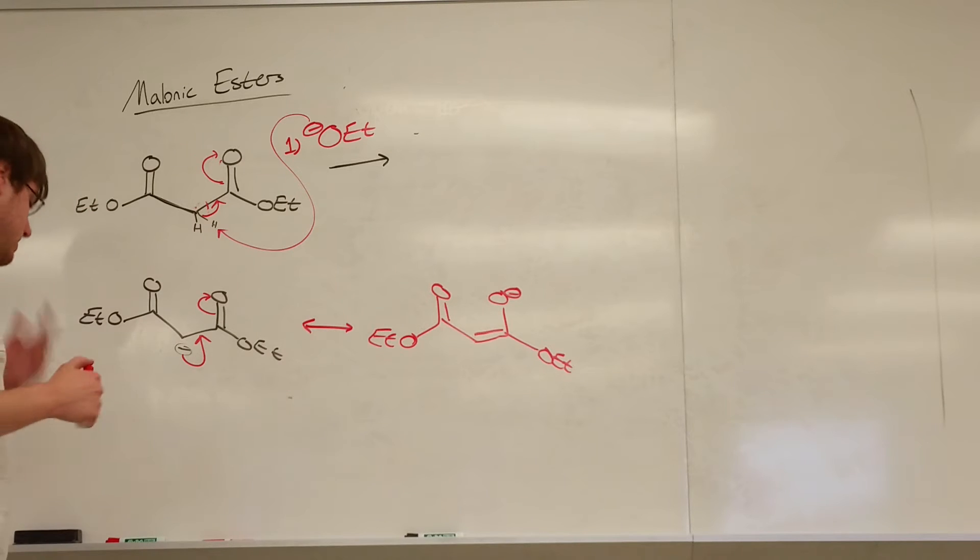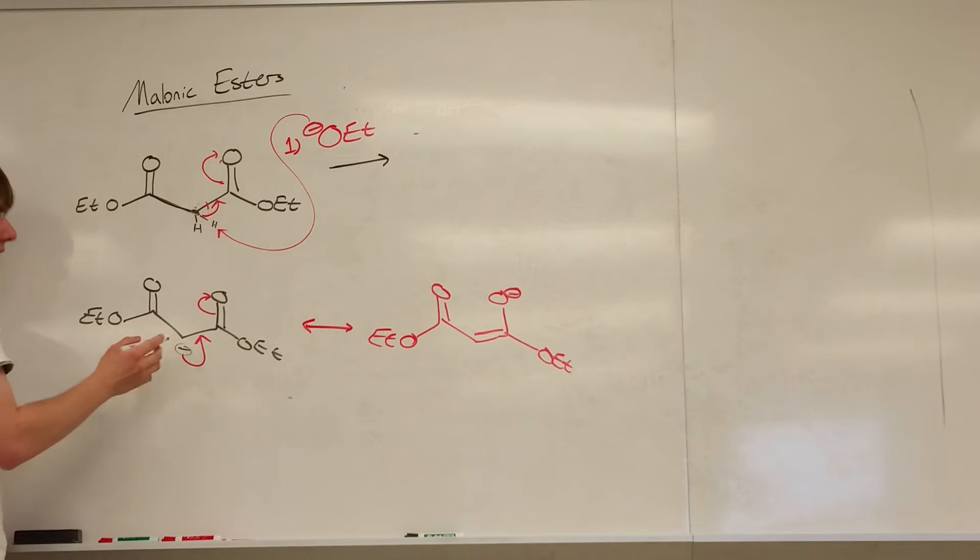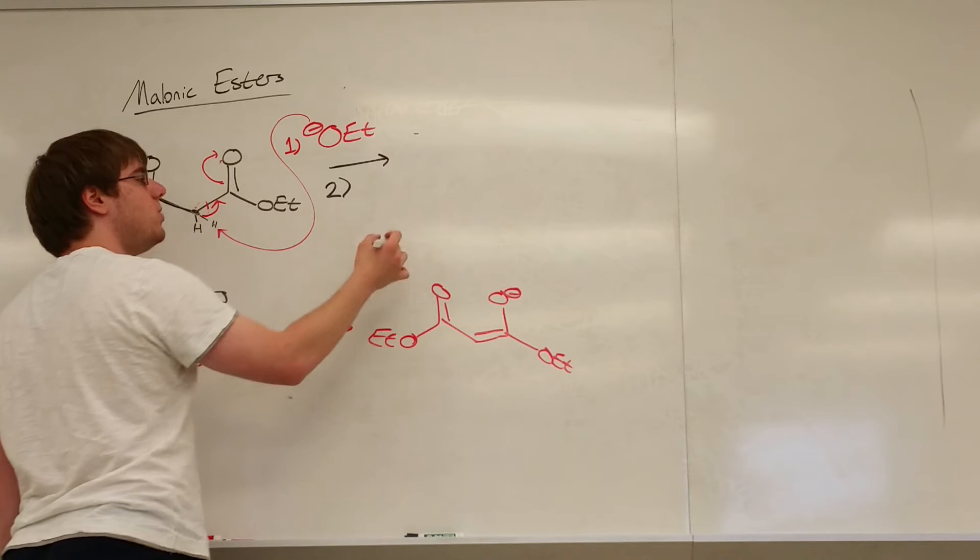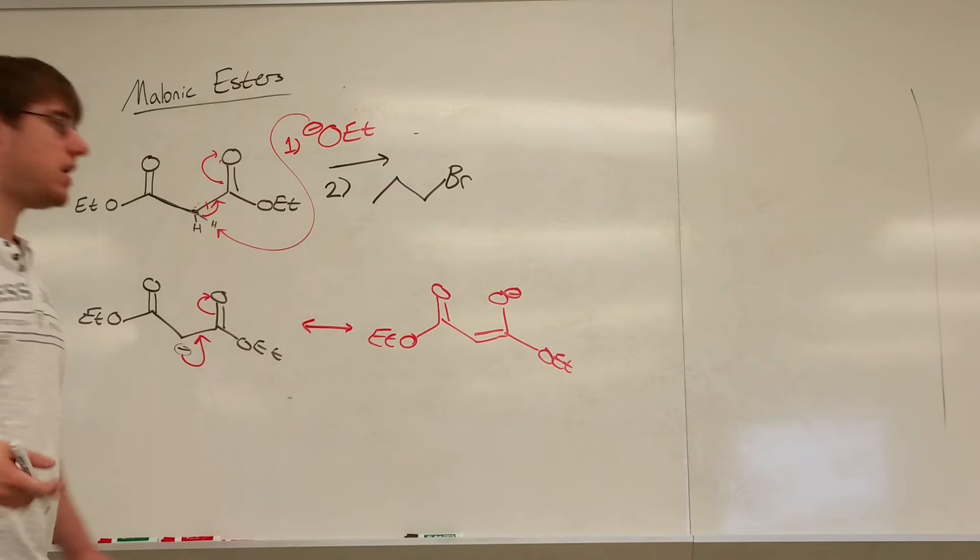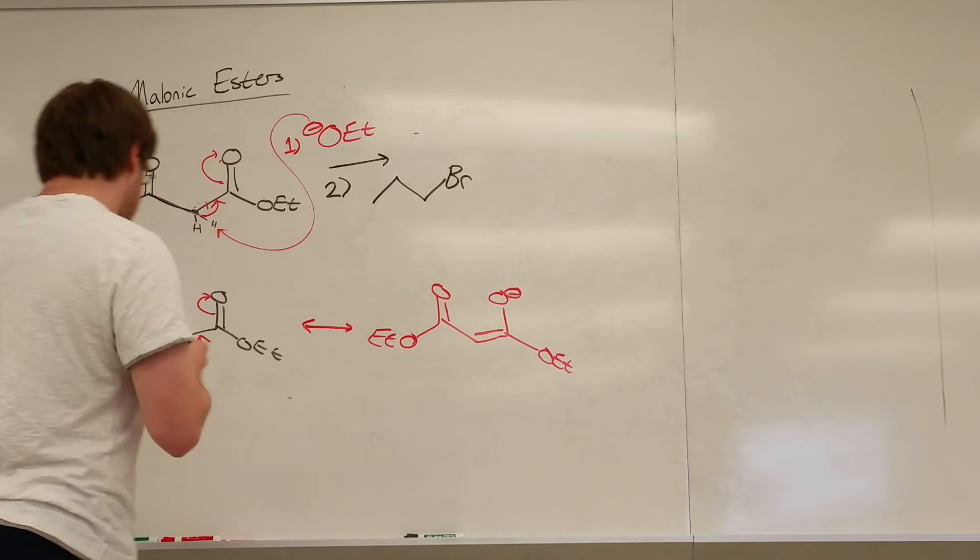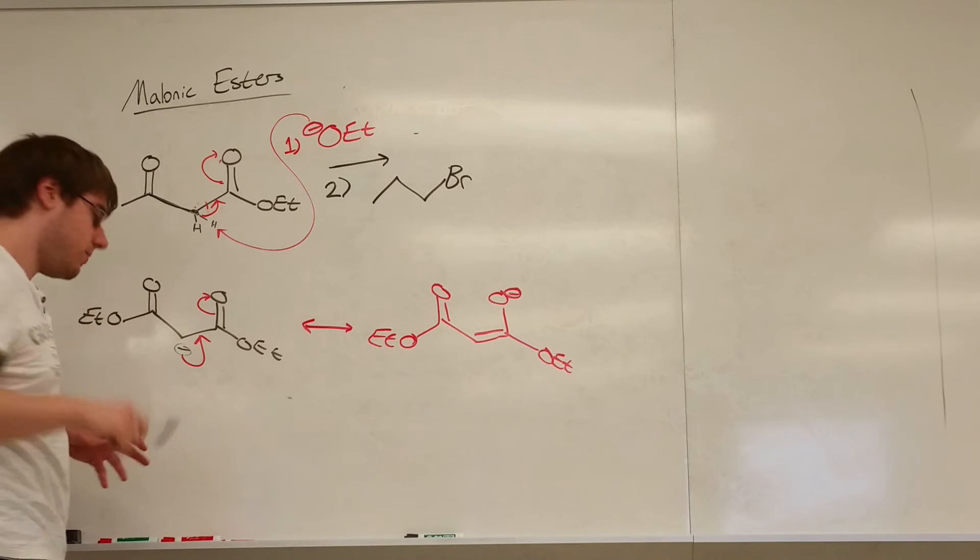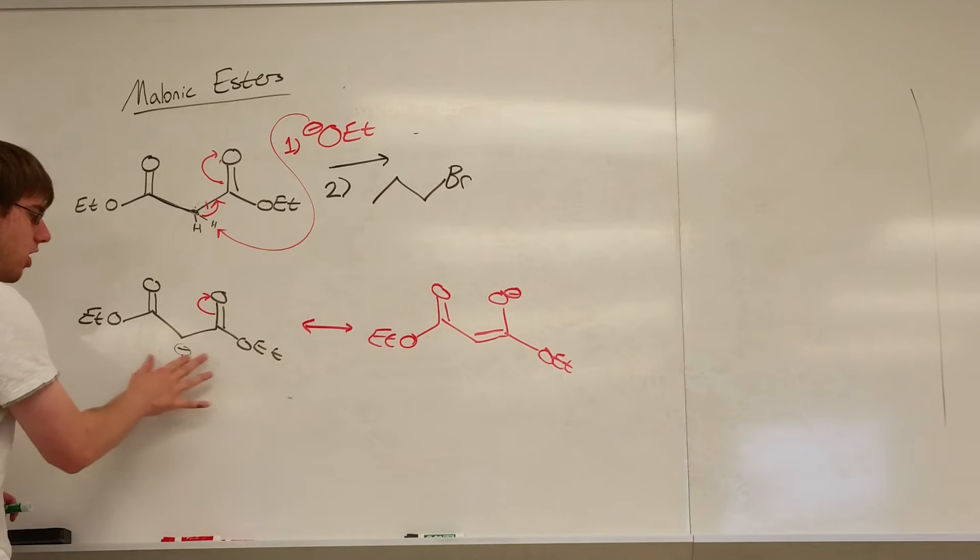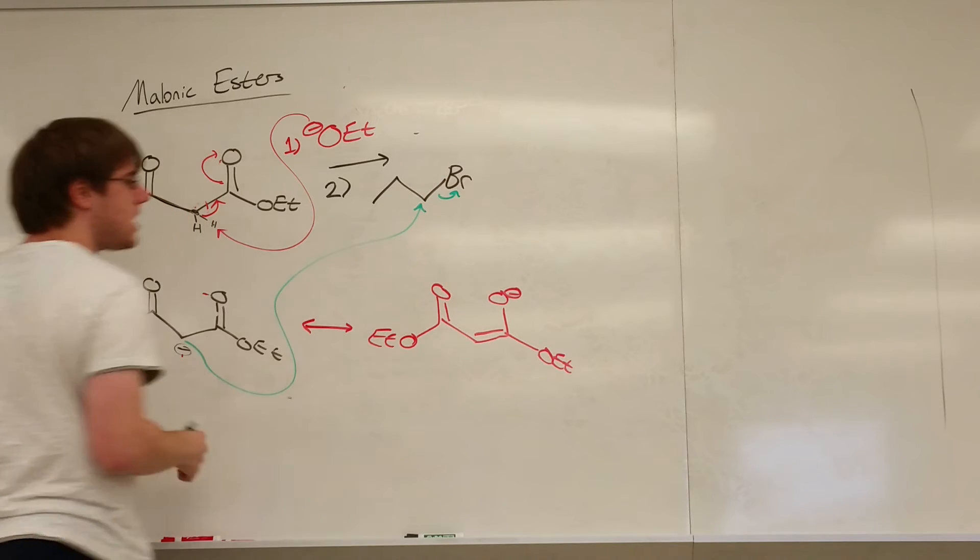Either way, what this will do next is, typically in a synthesis problem, you want to add carbons to this spot in the middle. And this negative charge is going to help you do it. What you'll have is the second step over your arrow will be some carbon chain with a leaving group on it, like bromine or chlorine, typically it's a halogen. And what happens is, that negative charge will attack the carbon and kick out the bromine.